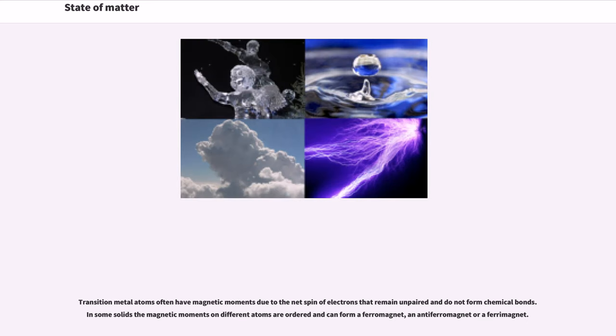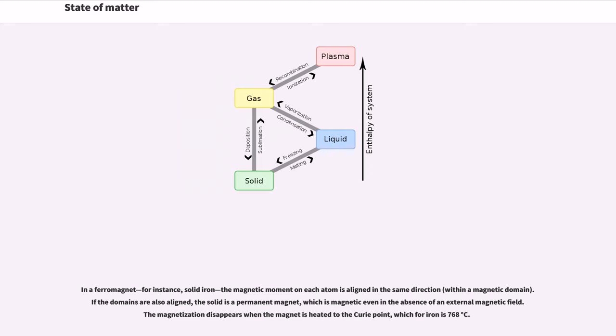Transition metal atoms often have magnetic moments due to the net spin of electrons that remain unpaired and do not form chemical bonds. In some solids the magnetic moments on different atoms are ordered and can form a ferromagnet, an anti-ferromagnet or a ferrimagnet. In a ferromagnet, for instance, solid iron, the magnetic moment on each atom is aligned in the same direction, within a magnetic domain. If the domains are also aligned, the solid is a permanent magnet, which is magnetic even in the absence of an external magnetic field. The magnetization disappears when the magnet is heated to the Curie point, which for iron is 768 degrees Celsius.